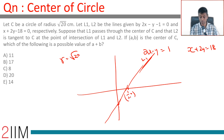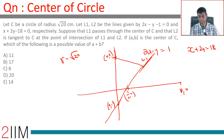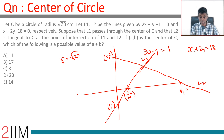For L2, which is x plus 2y equals 18: when y=0, x=18 (point: 18, 0); when x=0, y=9 (point: 0, 9). It's a line like this — that is L2. Now, L1 passes through the center C, and L2 is tangent to C at the point of intersection of L1 and L2.